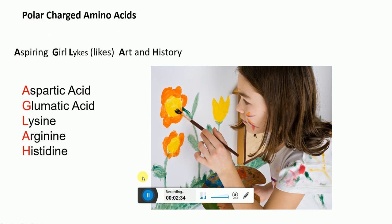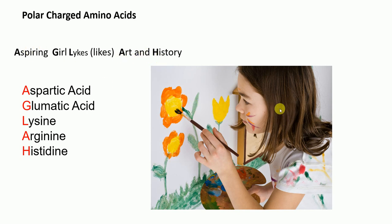Moving on to polar charged amino acids. The mnemonic here is: 'An aspiring girl likes art and history.' Look at the letters in bold — A for aspartic acid, G for glutamic acid, L (spelled L-Y but pronounced 'likes') for lysine, Arch for arginine, and history for histidine.